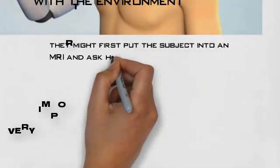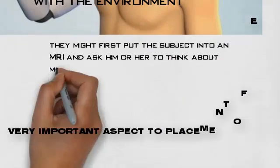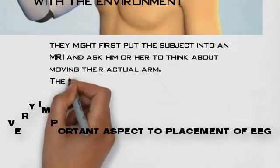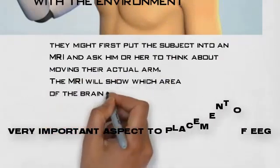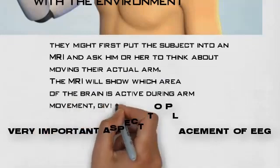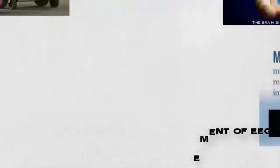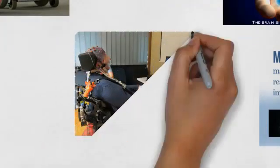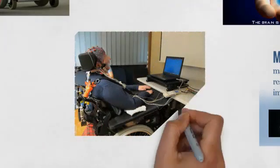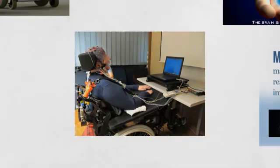If researchers are attempting to implant electrodes that would allow someone to control a robotic arm with their thoughts, they might first put the subject into an MRI and ask them to think about moving their actual arm. The MRI will show which area of the brain is active during the arm movement, giving them a clearer target for the electrode placement.